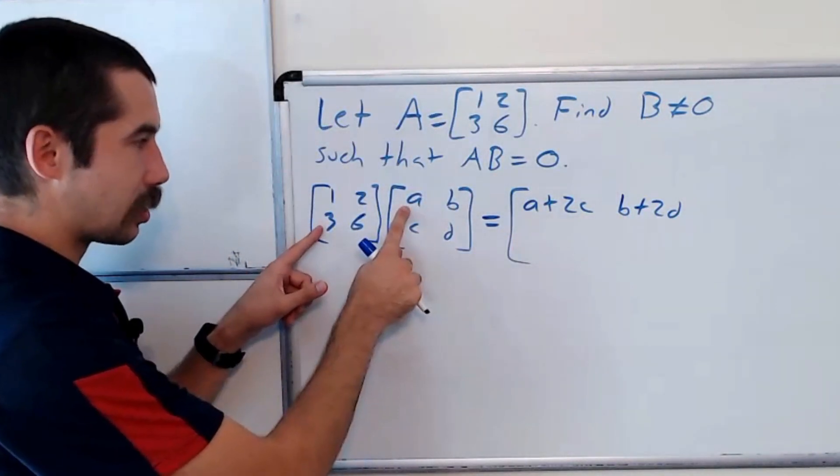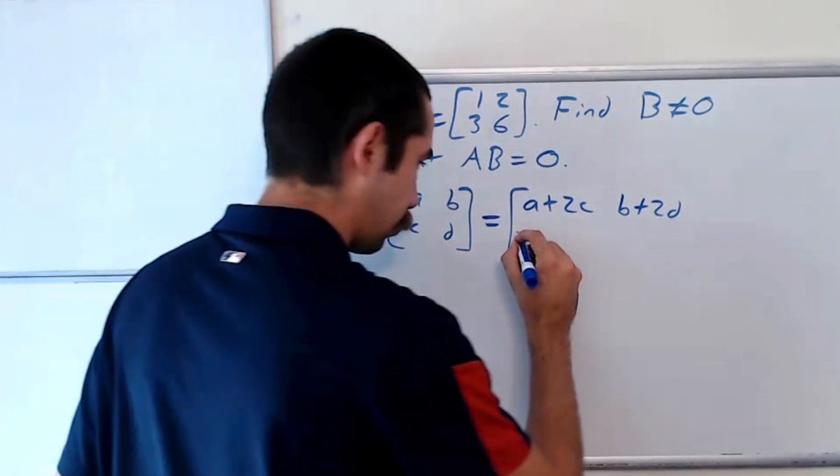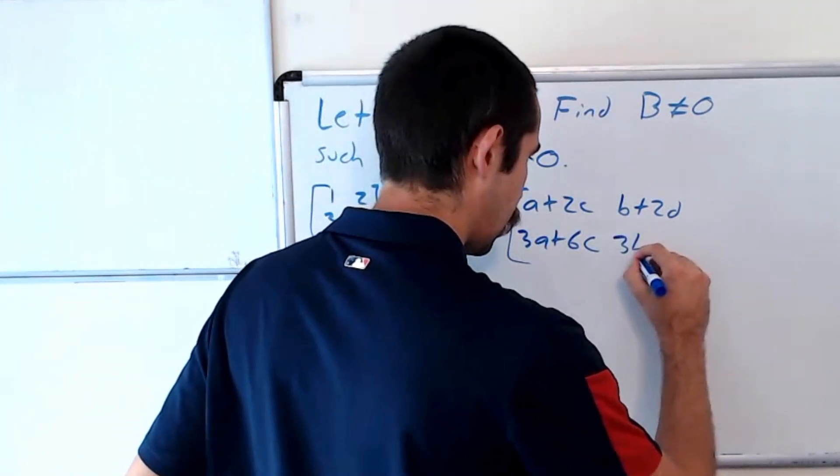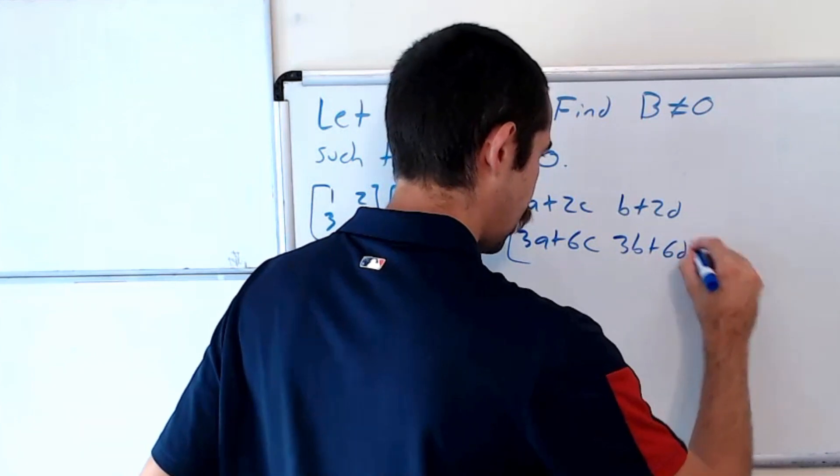This bottom entry is 3a plus 6c. And the last entry is 3b plus 6d.